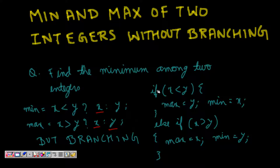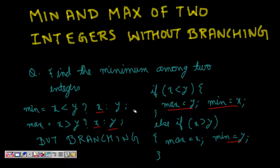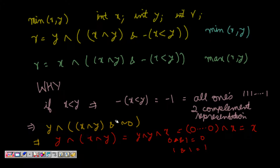Or we could write: if x is less than y, then max is y and min is x; else if x is greater than y, then x is maximum and y is minimum. But both of these use branching. So if we don't want that, we will look at some bit manipulation.